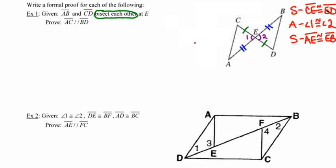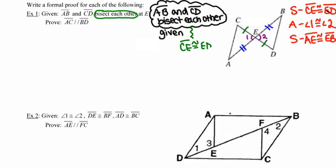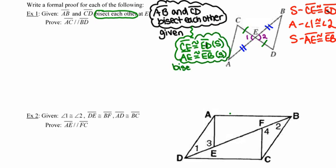Getting down to writing this proof: segment AB and segment CD bisect each other — that's true because it's given. Due to the fact that those segments bisect each other, I can now conclude that segments CE and ED are congruent, and that segments AE and EB are congruent. The reason for that is that bisectors make congruent segments, or bisectors form congruent parts.